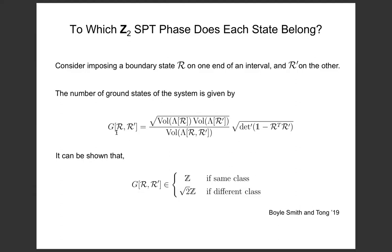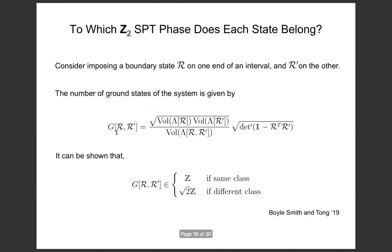We have a way to distinguish which of the two classes the boundary states are in. Now I'll tell you the main part of the talk: what happens when you do RG flows between boundary states. I'd be very happy to take any questions if people have them.